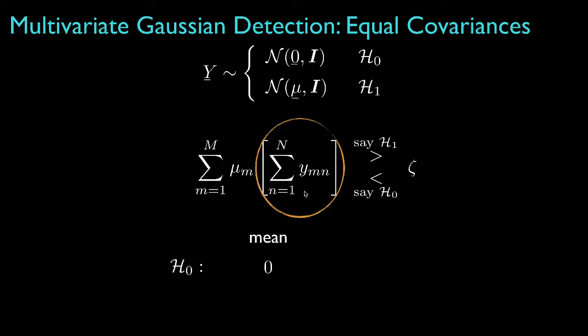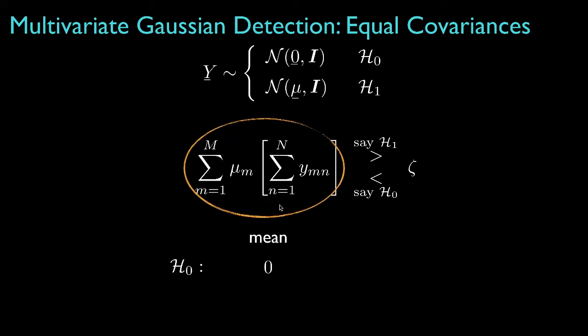Because the data have zero mean for hypothesis zero, the mean for this inner summation will be zero, as will be the corresponding mean for the decision statistic.